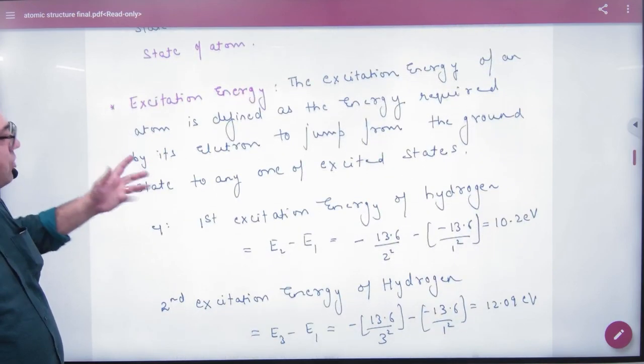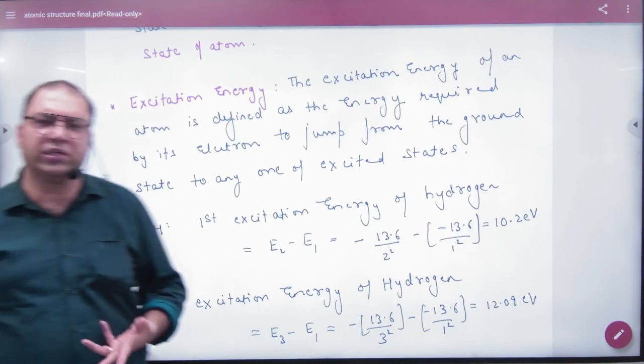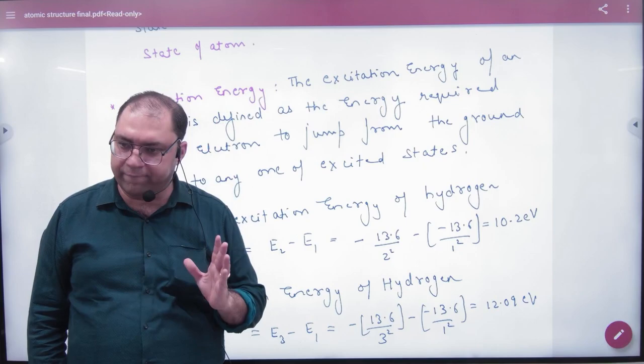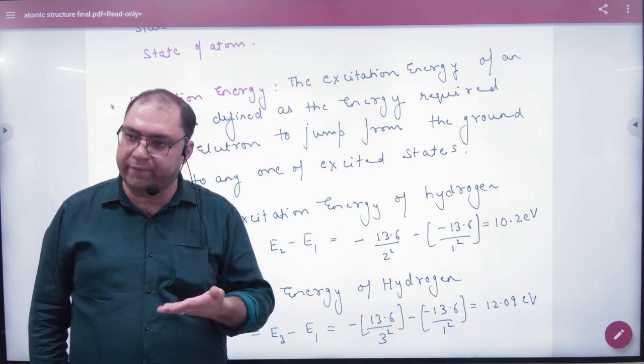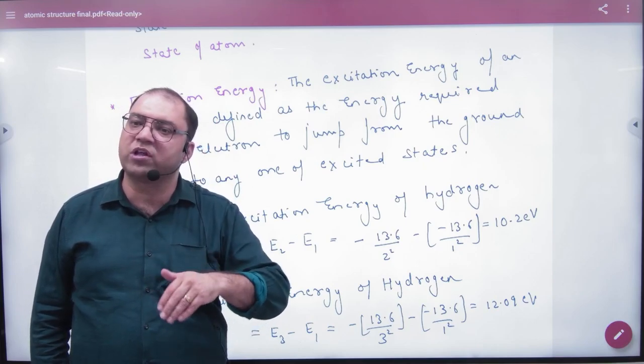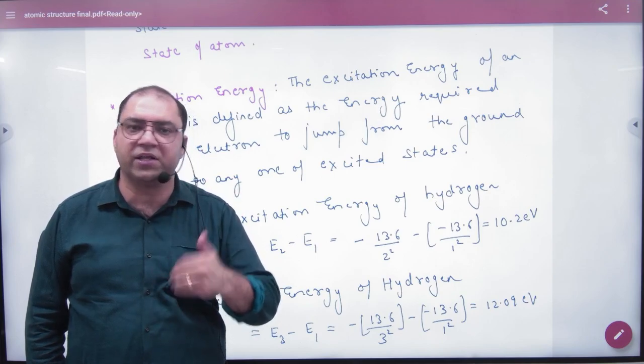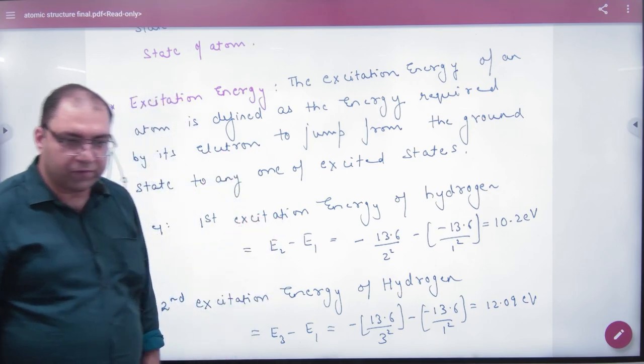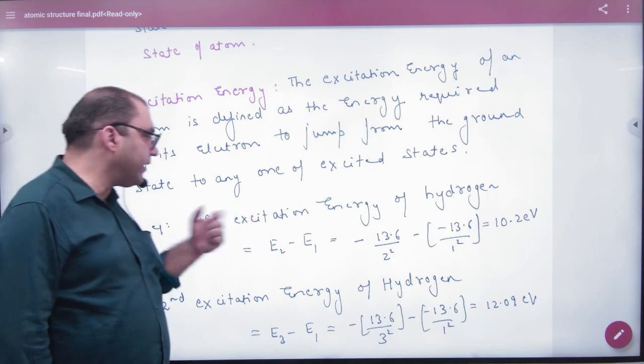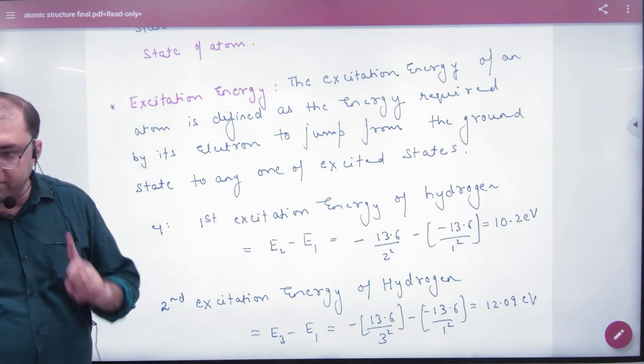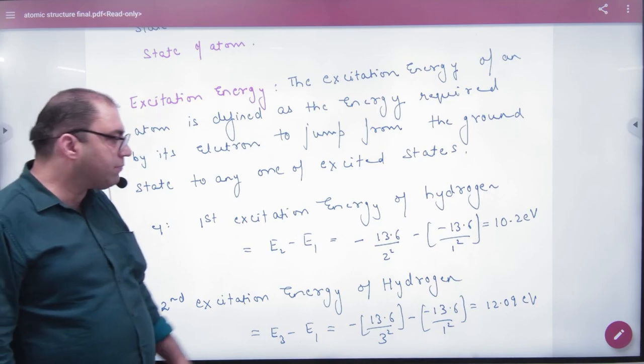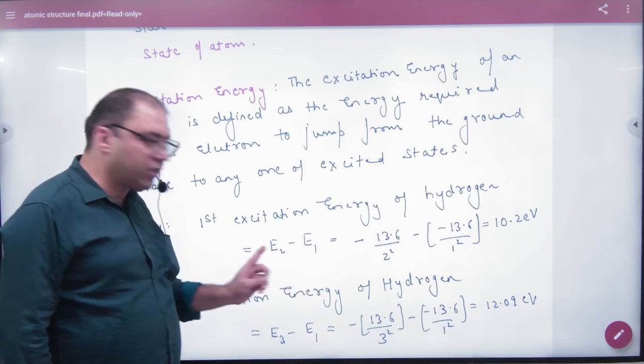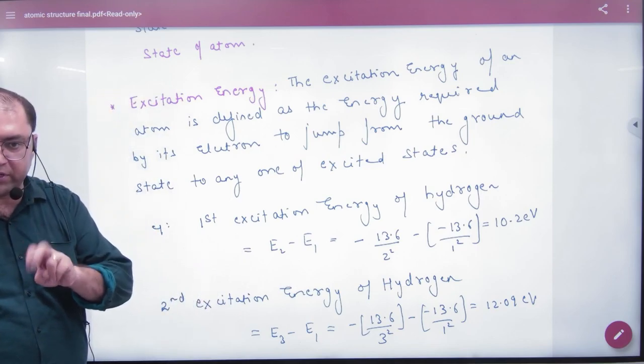If we talk about excitation energy, what is excitation? Excitation is taking the electron from the inner shell to the outer shell. You have given energy so that the electron is transferred from inner to outer shell. They call this excitation energy. For example, if you ask the first excitation energy in hydrogen, the electron was at n equals 1, then where did it go? N equals 2. It is called first excitation.